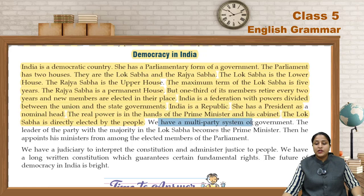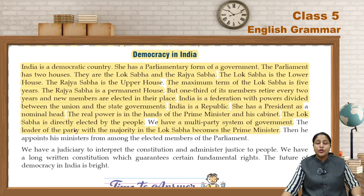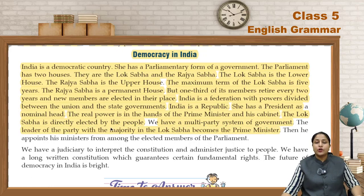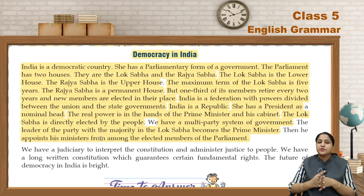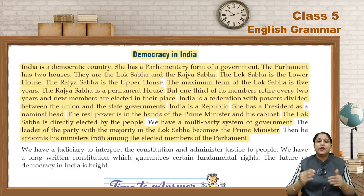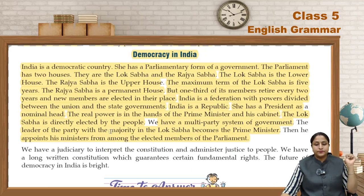We have a multi-party system of government. The leader of the party with the majority in the Lok Sabha becomes the prime minister. Jiski bhi majority hoti hai Lok Sabha mein, woh prime minister ban jaata hai. Then he appoints his ministers from among the elected members of the parliament. Phir un elected members mein se hi woh apne ministers appoint karta hai.